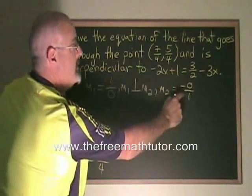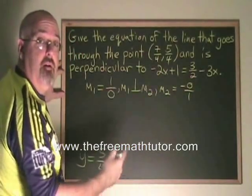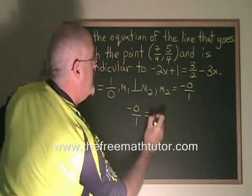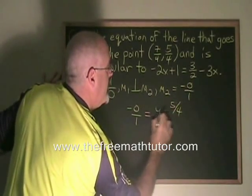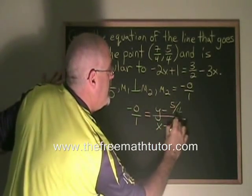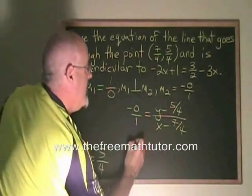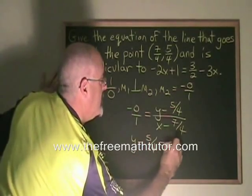Now I can use this fraction and the point I was given in the usual way to derive the equation of the line. Negative 0 over 1 is equal to (y minus 5/4) over (x minus 7/4). Cross multiplying, I get y minus 5/4 equals 0.